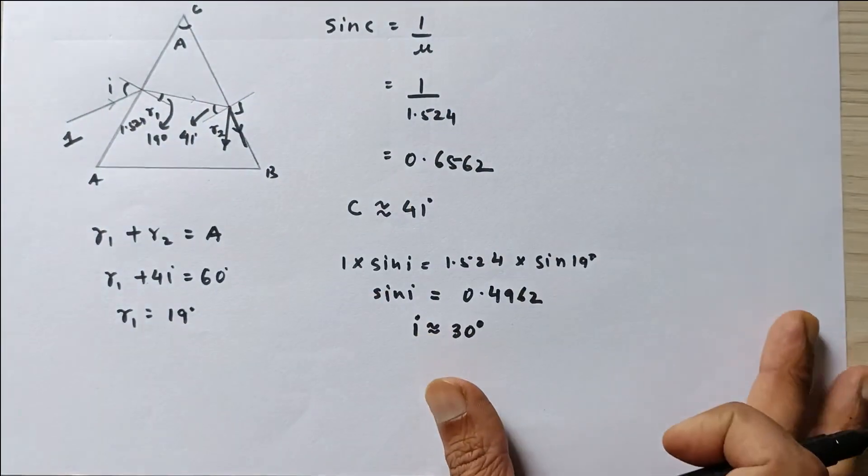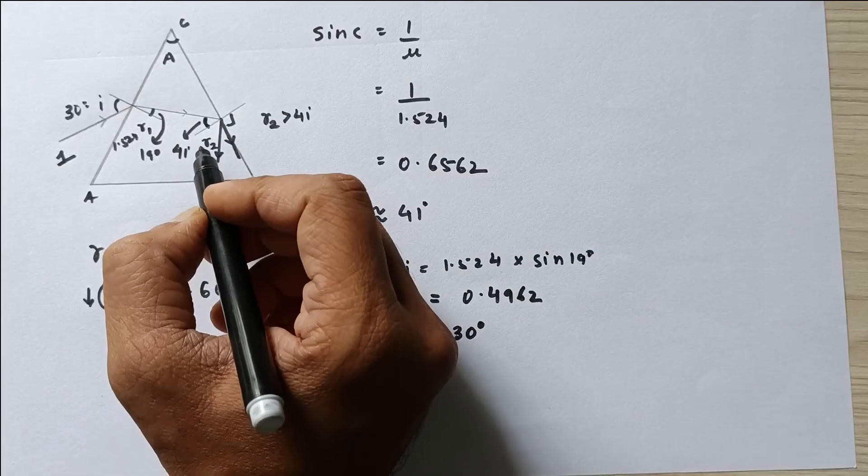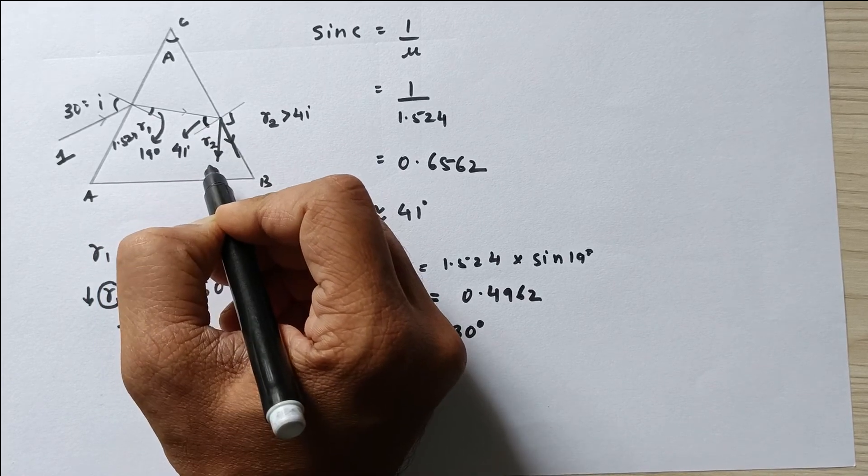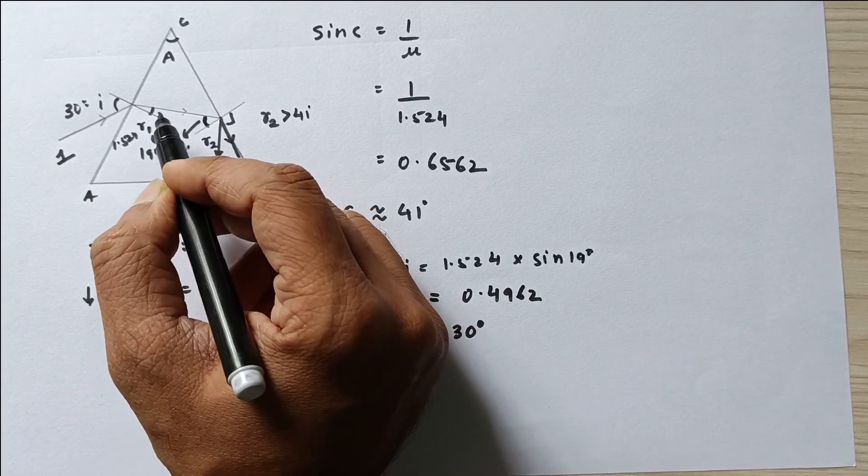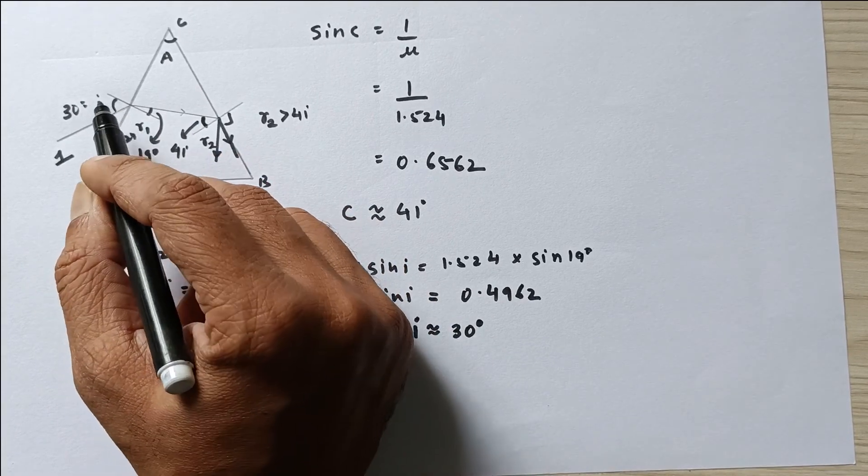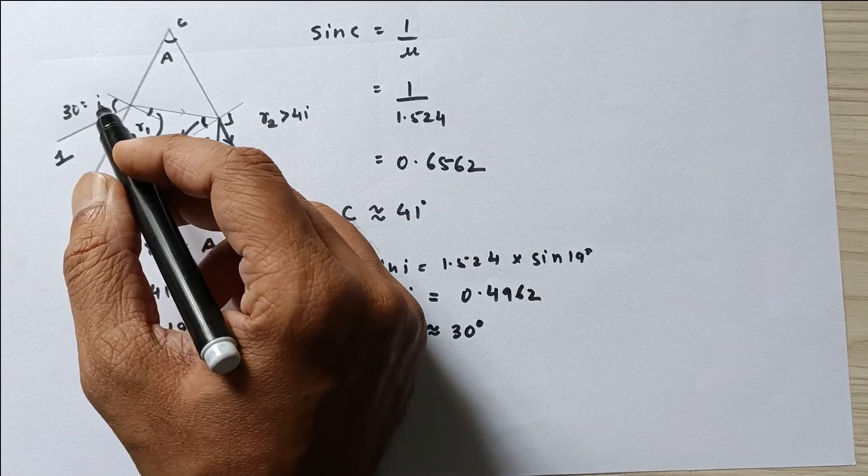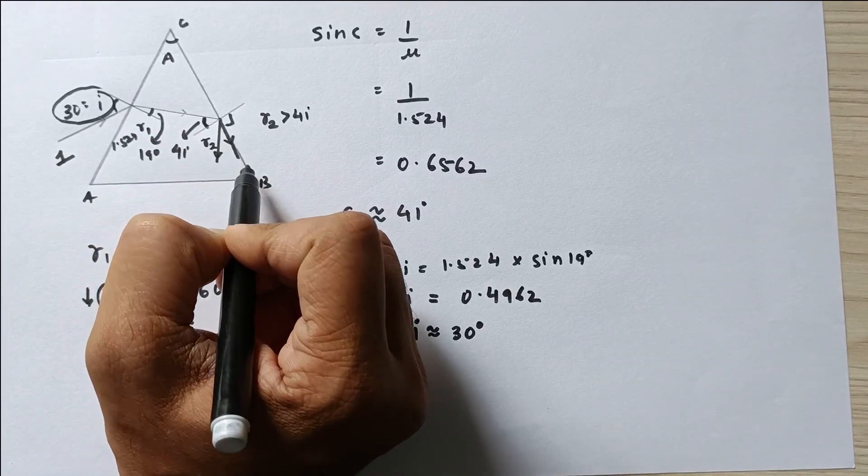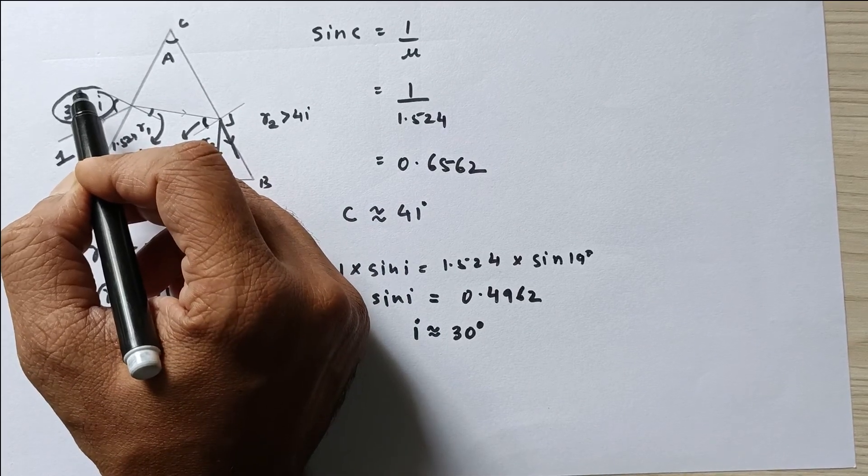Now solving the problem was not very difficult. You have to understand that if this angle increases beyond 41 degrees, then TIR happens. If this angle is 42, then this has to be less than 19. If this is less than 19, then this will definitely be less than 30. So this is the maximum angle at which the ray is going to be parallel to the surface.